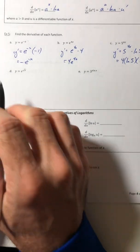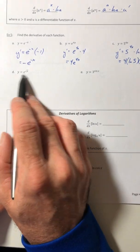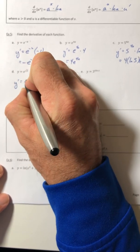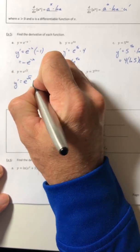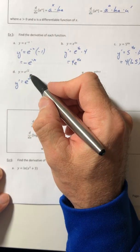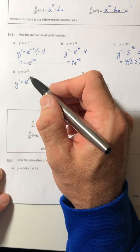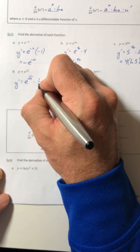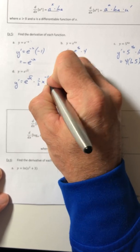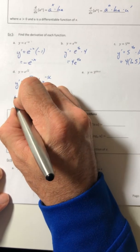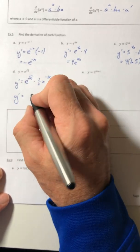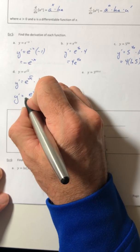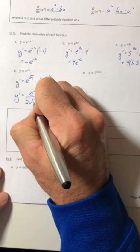Okay, part D. Oh, we're back to e's again, nice. So just recopy it, then multiply by the derivative of your exponent. So the derivative of root x is one half x to the negative half. So we end up with e to the root x all over 2 root x.